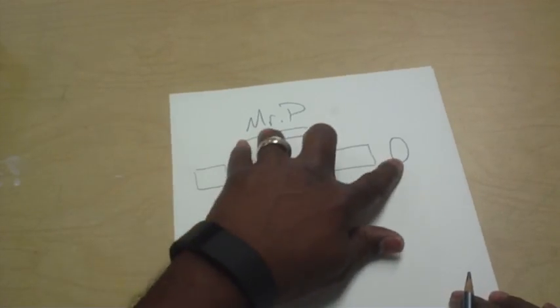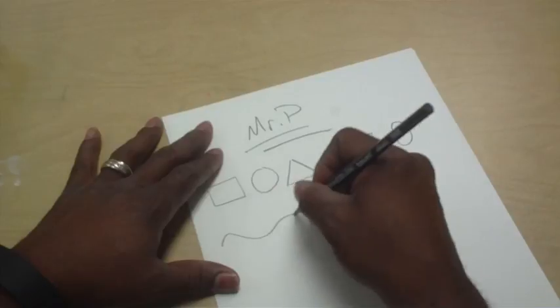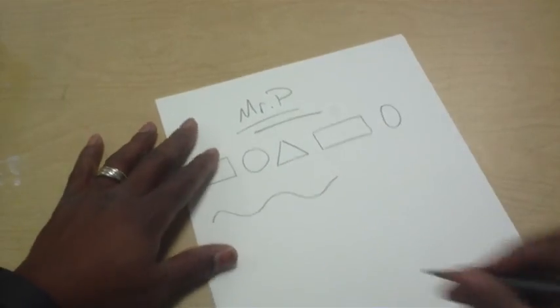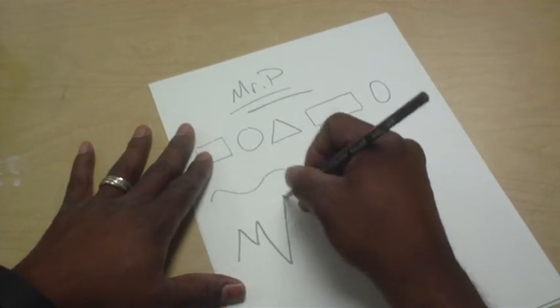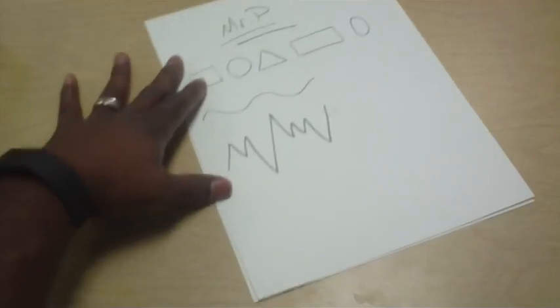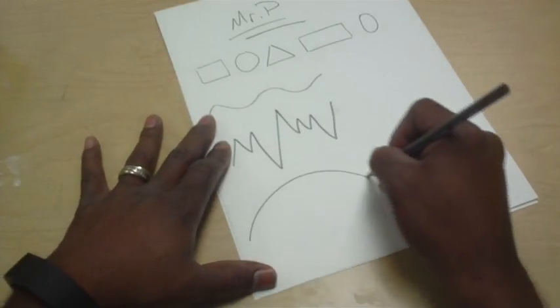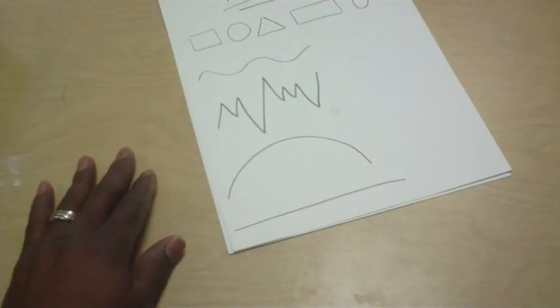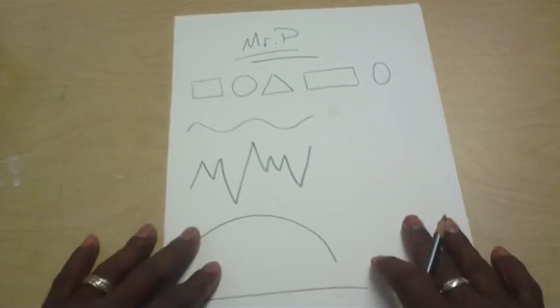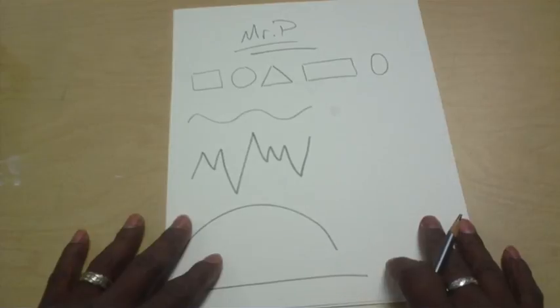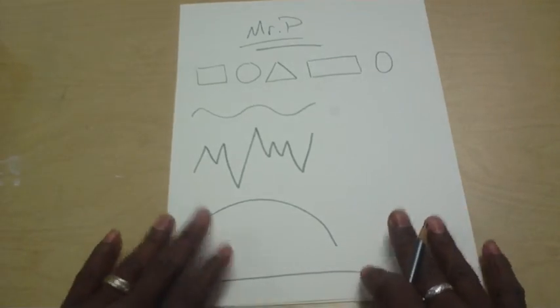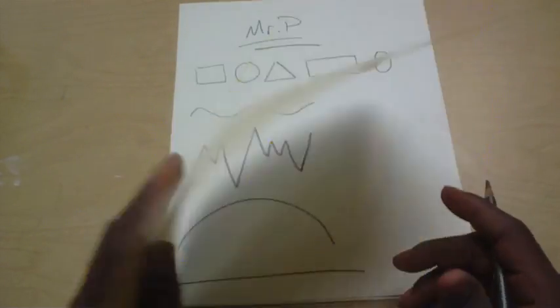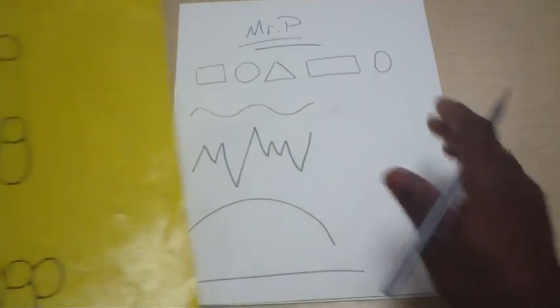Then we went on to a wavy line, zigzag line, curve line, and straight line. We did all that in one day. Once you get that done, you're going to choose one of these animals—doesn't matter which one you want. You practice on this side first.